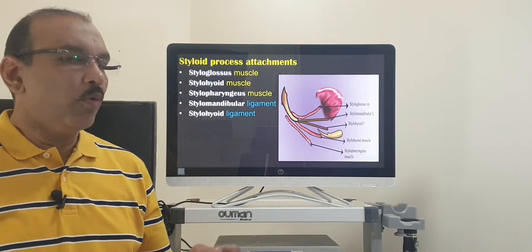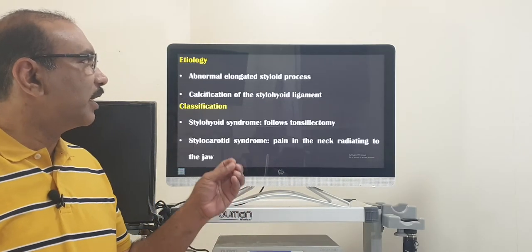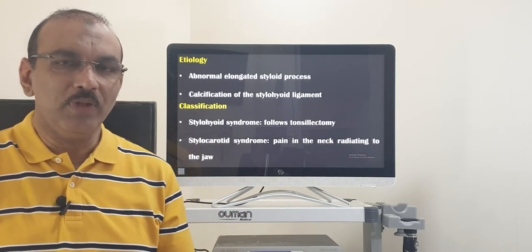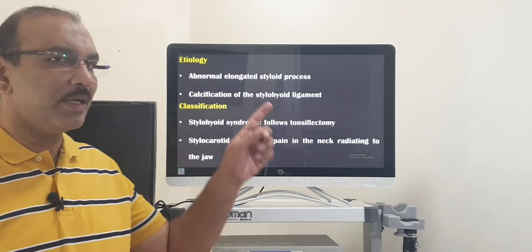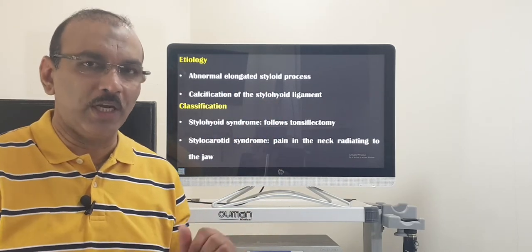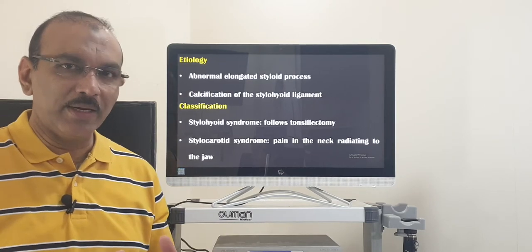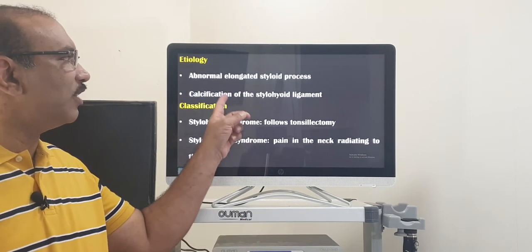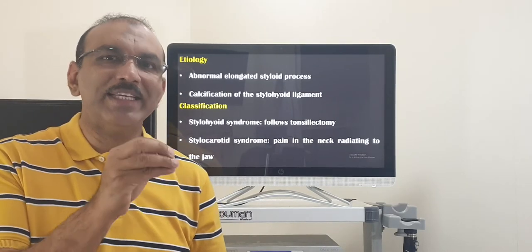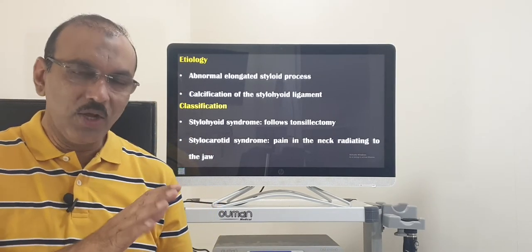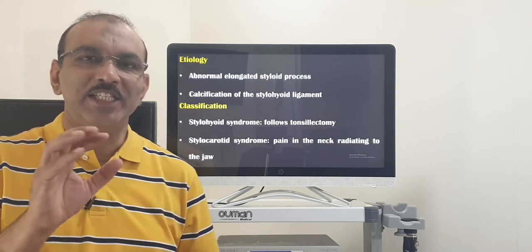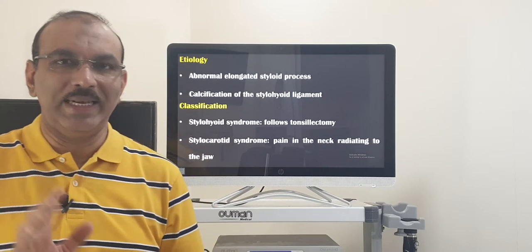The cause for this syndrome — stylohyoid syndrome — can be one of two things. One is an elongated styloid process, where 2.5 centimeters has now become 4 centimeters. Or it can be calcification of the stylohyoid ligament. Whatever the cause, the result is that the normal styloid process is elongated to 4 centimeters in length.